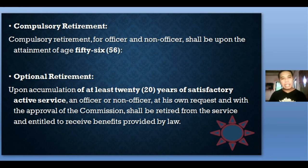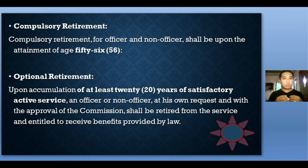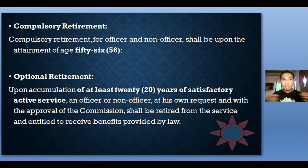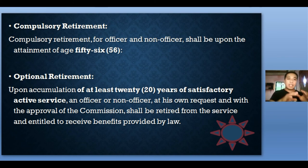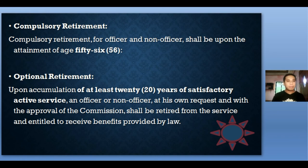There are two types of retirement. Compulsory retirement is given to officers and non-officers when they attain the age of 56. Whether they like it or not, as long as they reach age 56, they must retire as mandated by law. Optional retirement, on the other hand, applies when a police officer has accumulated 20 years of satisfactory active service — the person can apply for optional retirement even if they have not reached age 56.